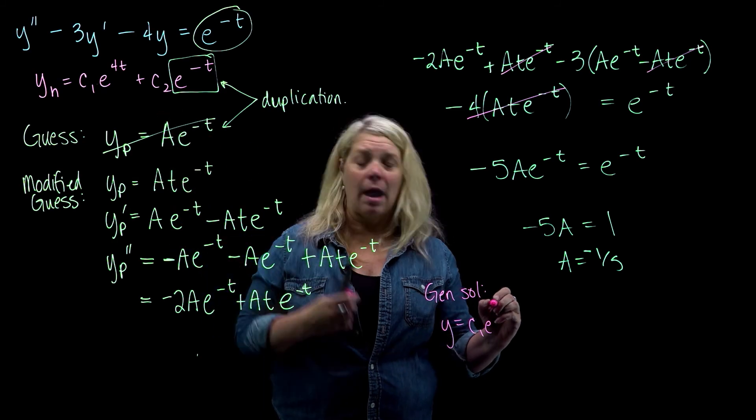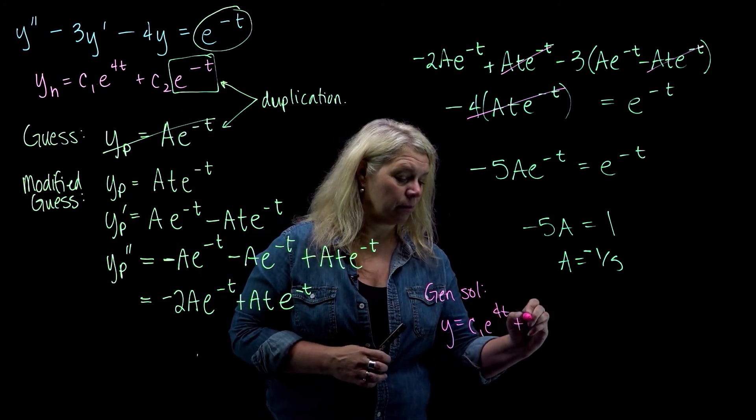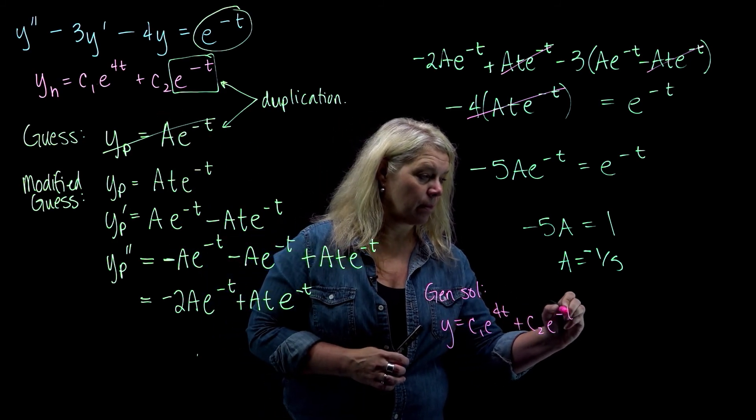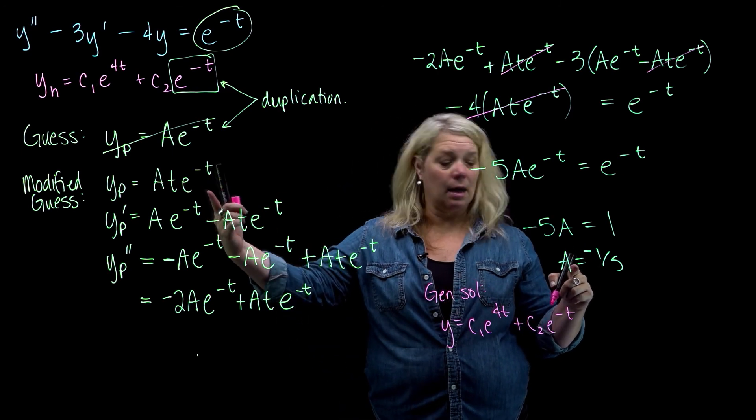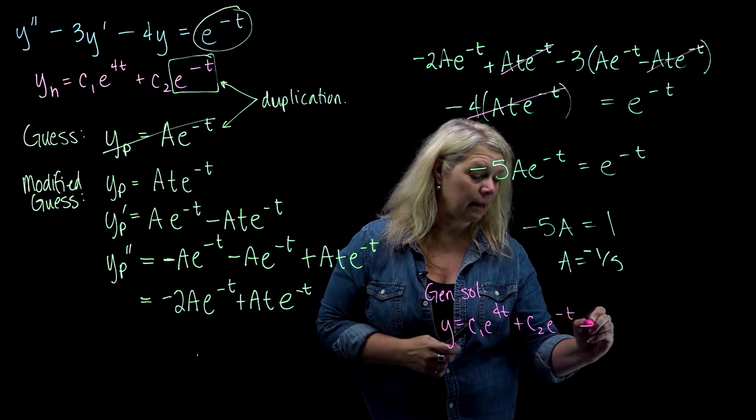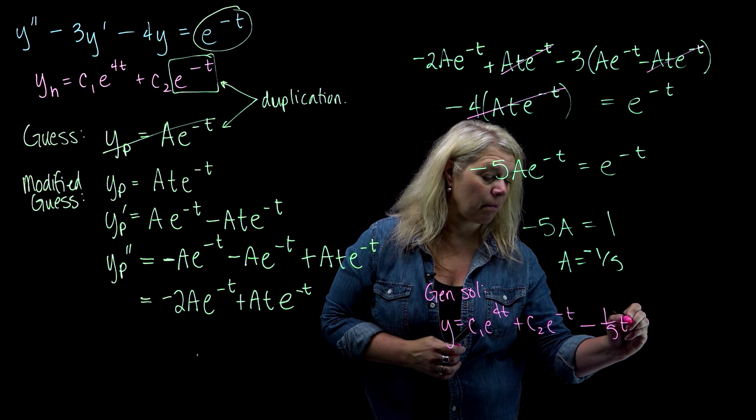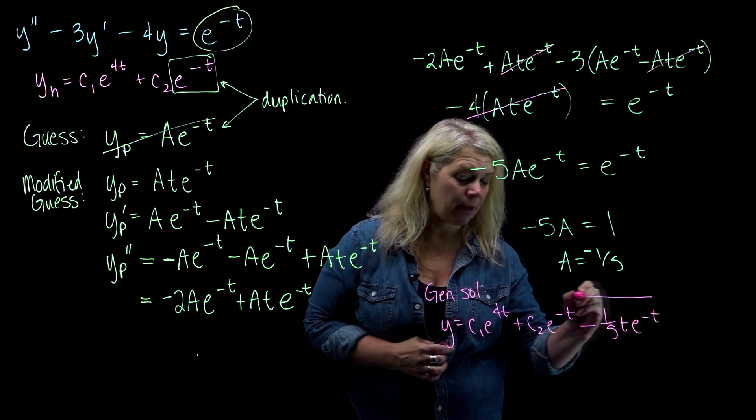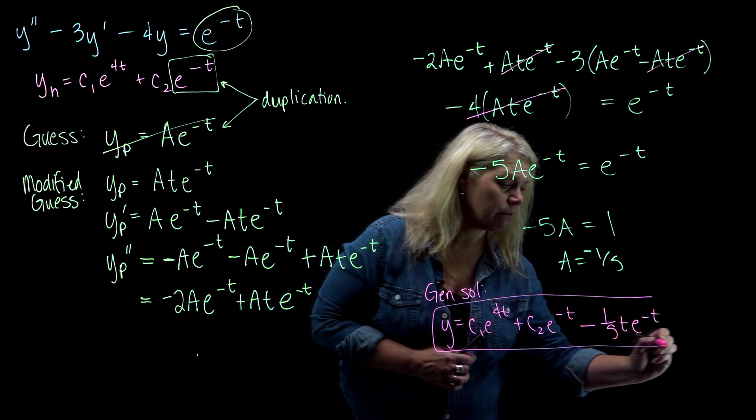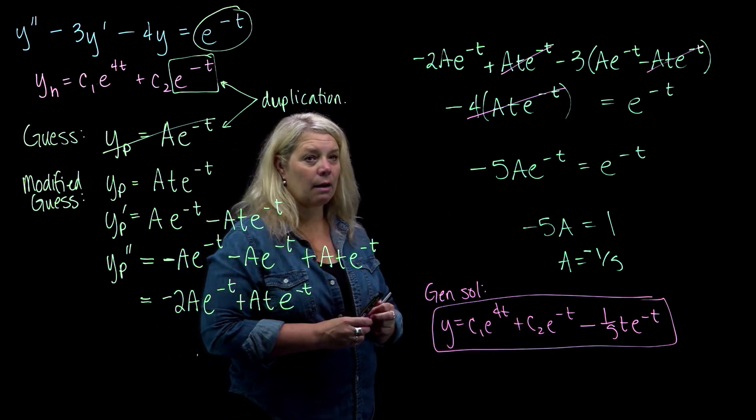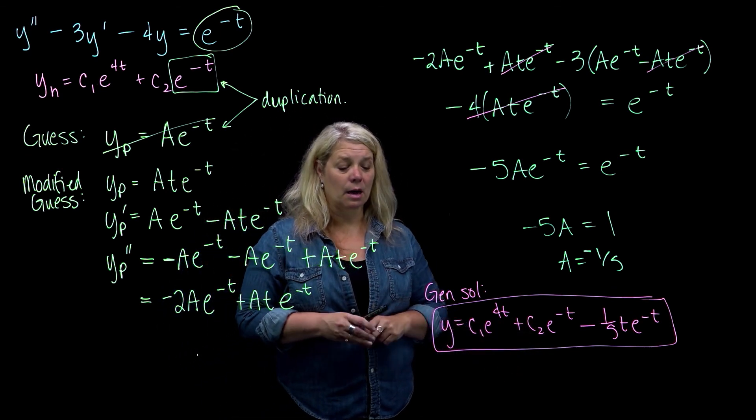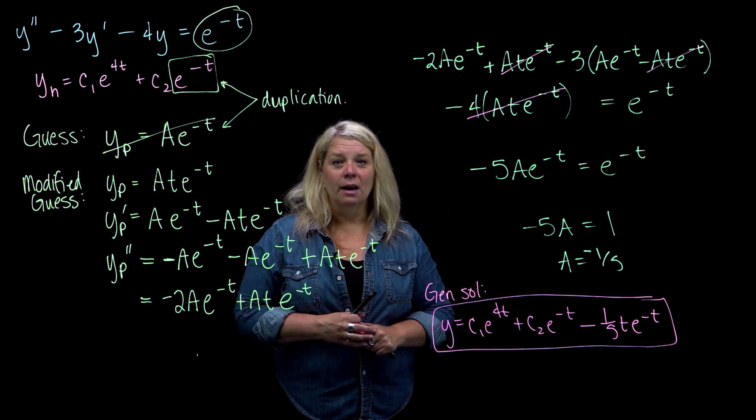So, we have our y_h plus our y_p minus 1 fifth t e to the negative t. And if you had initial values, this would be the time to use them to find a particular solution with the parameters, the constants c1 and c2.